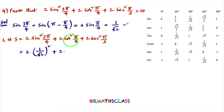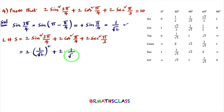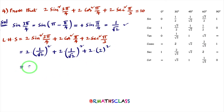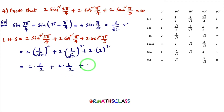Plus 2·cos²(π/4): cos(π/4) = cos 45° = 1/√2, so this is 2·(1/√2)². Plus 2·sec²(π/3): sec(π/3) = sec 60° = 2, so this is 2·(2)² = 2·4 = 8.